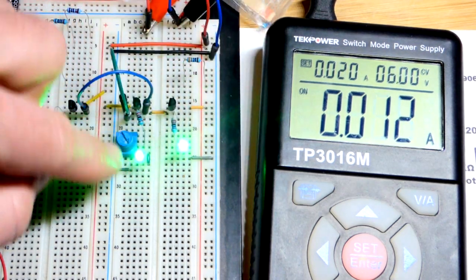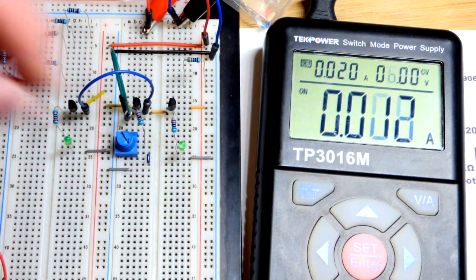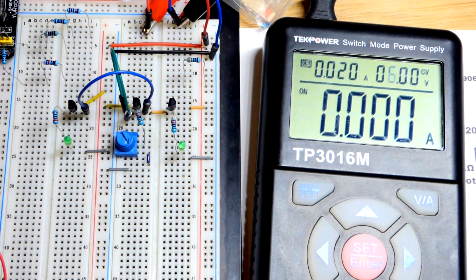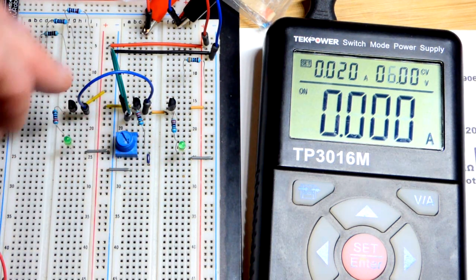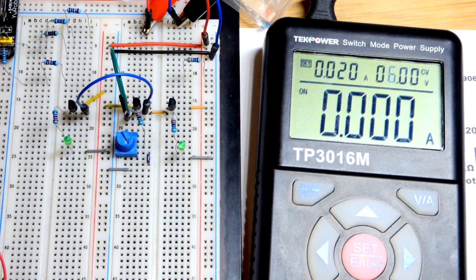Since this transistor here sets the current, if I yank the LED, no current is flowing through it. It's an open circuit, so no current is flowing through the other LEDs or their transistors.